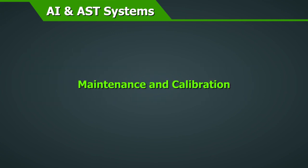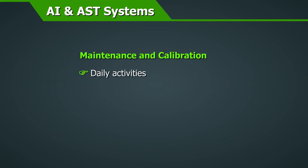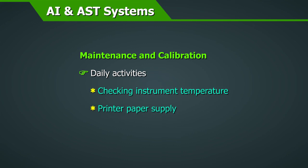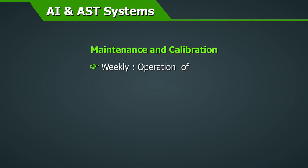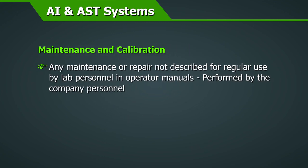Maintenance and calibration of the automated AST platforms is strictly as per the manufacturer's instructions or operator manuals provided at the time of installation. Daily activities include checking the instrument temperature and printer paper supply. Weekly, the operation of the station status indicators, alarm, and system alerts must be checked. Any maintenance or repair not described for regular use by lab personnel in operator manuals should be performed by company personnel only.